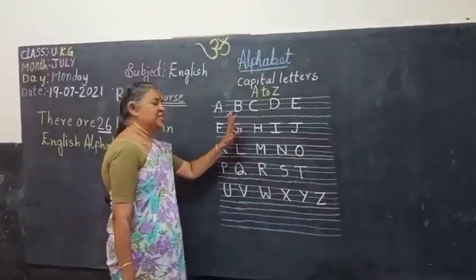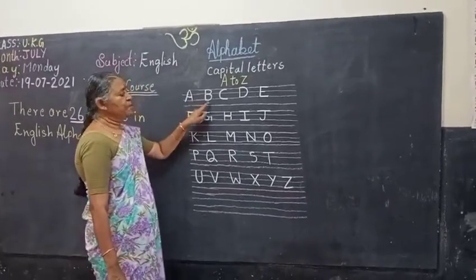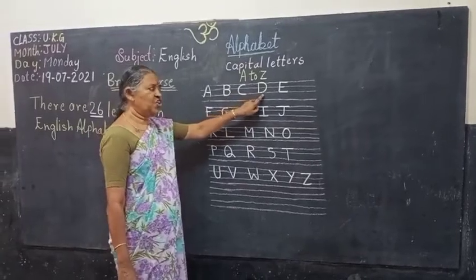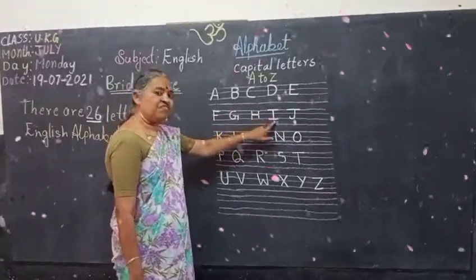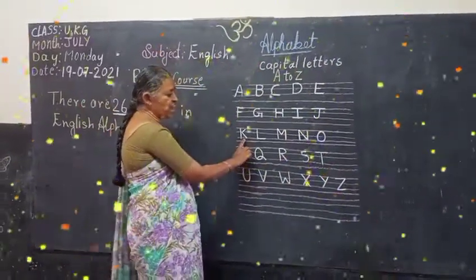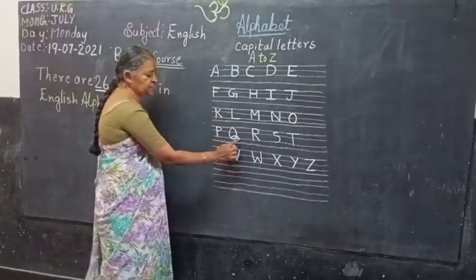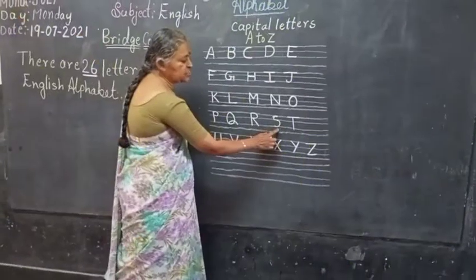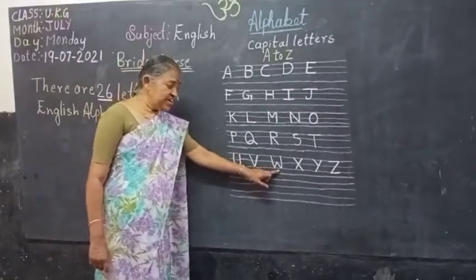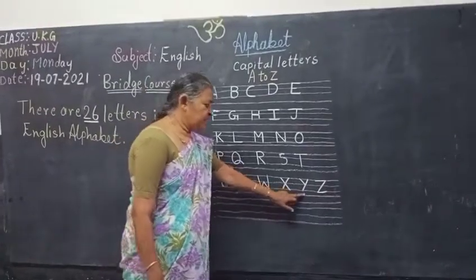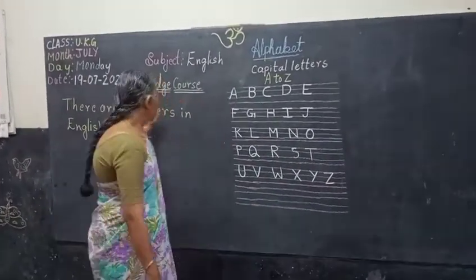And the last letter of the alphabet — that is Z: slanting line, slanting line, and the sleeping line — that is Z. Now let us review once again: A for apple, B for boy, C for cat, D for dog, E for elephant, F for fish, G for girl, H for horse, I for import, J for jug, K for kite, L for lion, M for monkey, N for nest, O for owl, P for parrot, Q for queen, R for rabbit, S for swan, T for tiger, U for umbrella, V for van, W for woman, X for x-ray, Y for yak, Z for zebra.